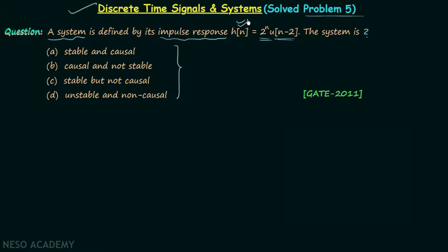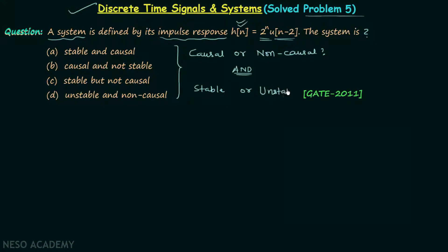By looking at the four options, it is clear that we are required to find whether the system having this impulse response is causal or non-causal. We are also required to find whether the system is stable or unstable. This question is important because we are going to understand the conditions for a system to be causal, non-causal, stable, and unstable.